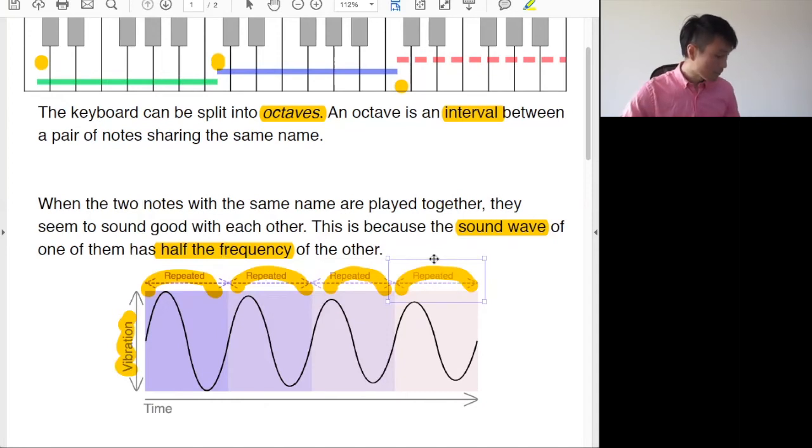Then I'll pick another note here. So this is the end of the octave, right? This is at the end of one octave. Now, this guy only requires one second. This is what's meant by one of them has half the frequency of the other. So this guy needs two seconds to do the cycle. This guy needs only one second.